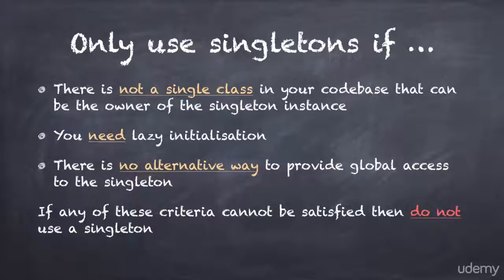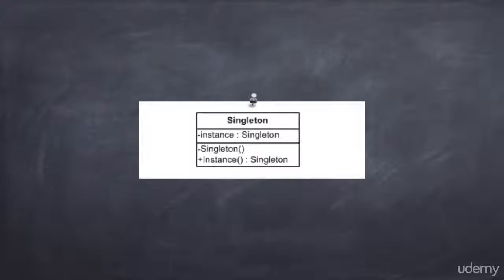Here is the UML diagram of the Singleton pattern. As you can see, it's a really simple pattern with only a single Singleton class. The class provides a static property getter, called Instance, that returns the Singleton instance.